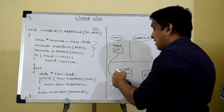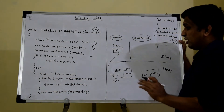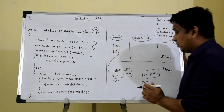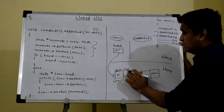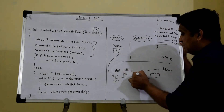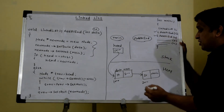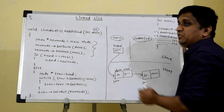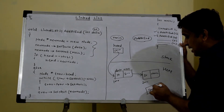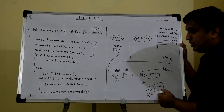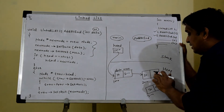On the second function call, the if condition becomes false because head already has a value, so it goes inside the else part. Suppose the else code executes and the second node is added to the linked list. At the end of the third function call, value is 30, a new node is created with 30 and null at say address 3000, it goes inside the else part again, and the node is added at the end of the linked list.